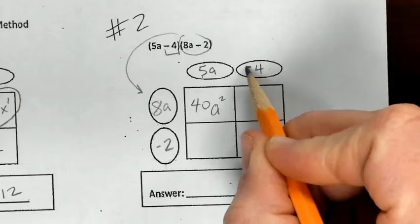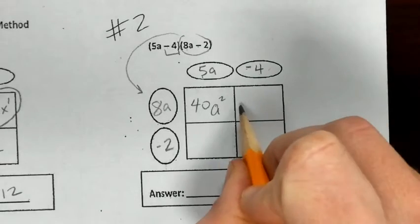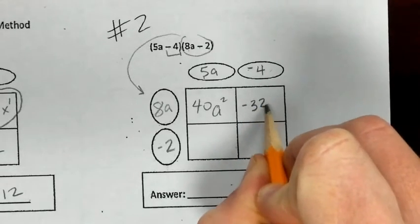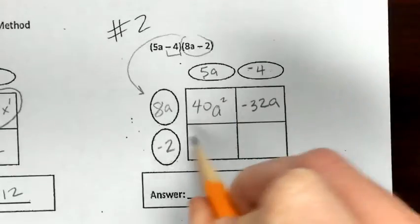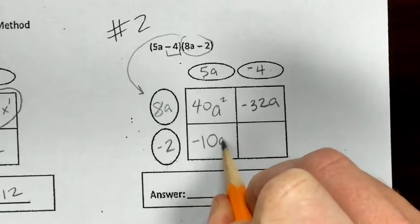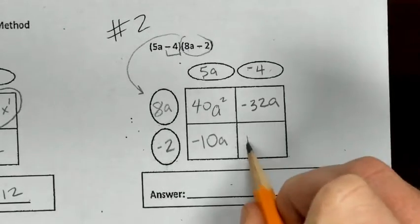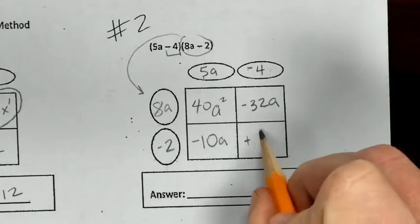I'm going across, so 8a times negative four. I can multiply those and I get negative 32a. Now I'm going down, 5a times negative two is negative 10a. And then a positive, because negative times a negative, positive eight.